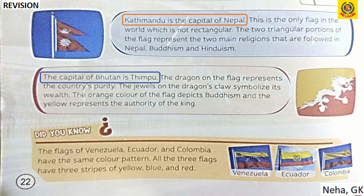There are three flags — Venezuela, Ecuador and Colombia — that all have the same color pattern, showing stripes of yellow, then blue, then red. Though their inside symbols are different, their three colors are the same.